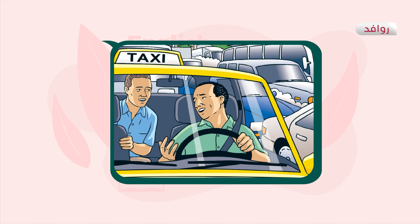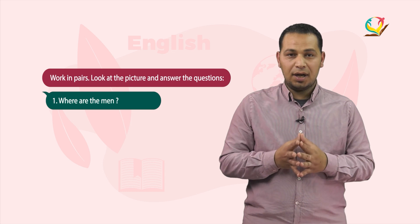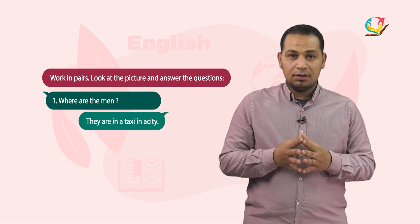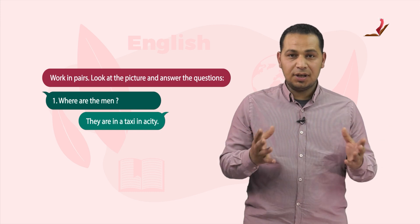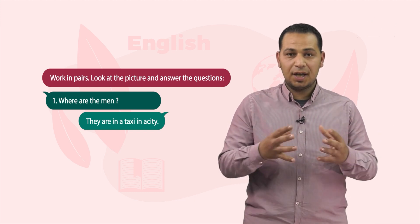Look at the screen to discuss the questions of activity two together. Number one: Where are the men? The answer: They are in a taxi in a city.